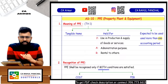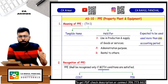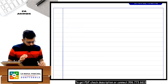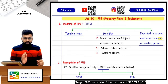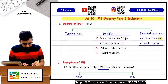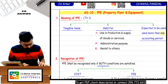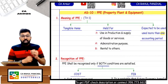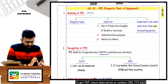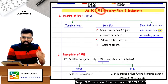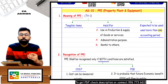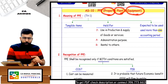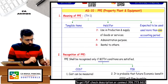The name of the standard is AS10 PPE, which is Property, Plant and Equipment. Suppose you are a businessman and you buy something. What is PPE? It is like your fixed asset. Earlier it was called fixed asset; now we say it is PPE - Property, Plant and Equipment.